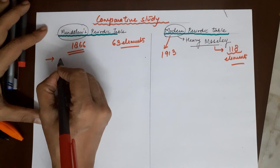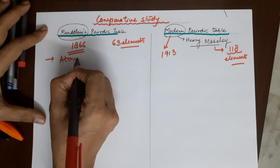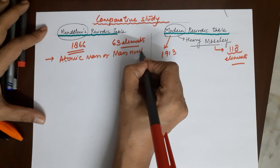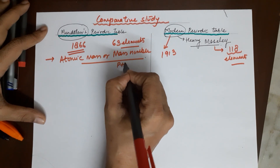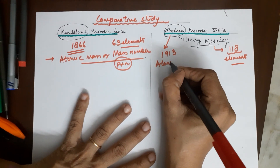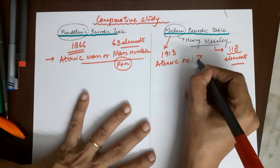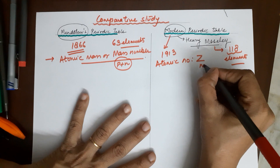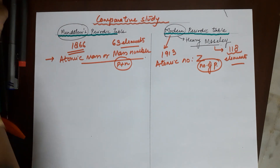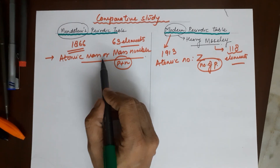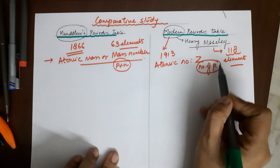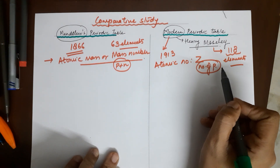Mendeleev's periodic table is based on atomic mass, or the mass number, which means protons plus neutrons, whereas the modern periodic table is based on atomic number, represented as Z, which equals the number of protons. When arranging elements in Mendeleev's table, you arrange them in increasing order of mass number; in the modern periodic table, you arrange them in increasing order of atomic number.